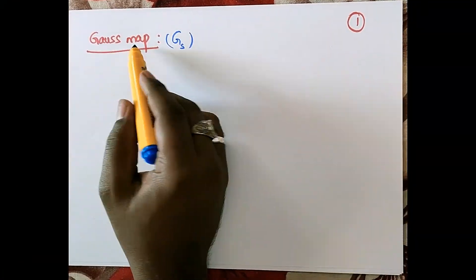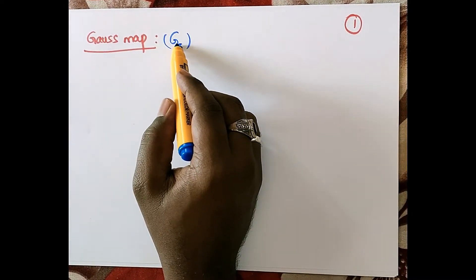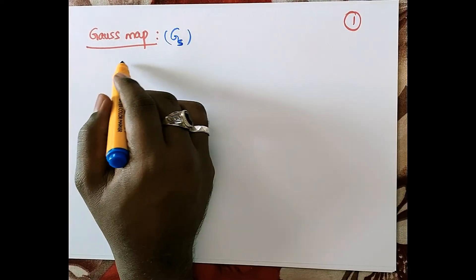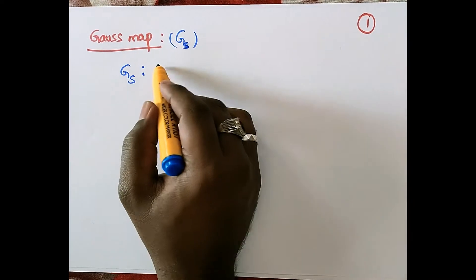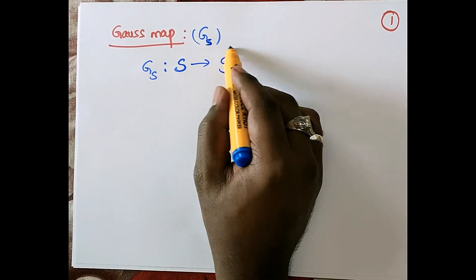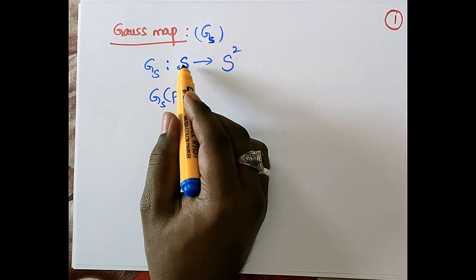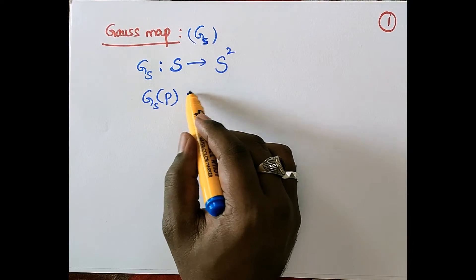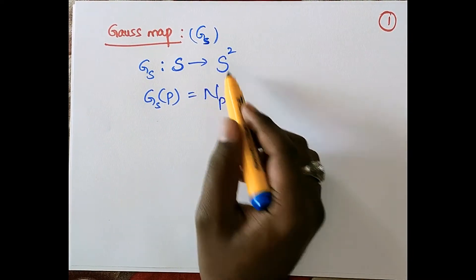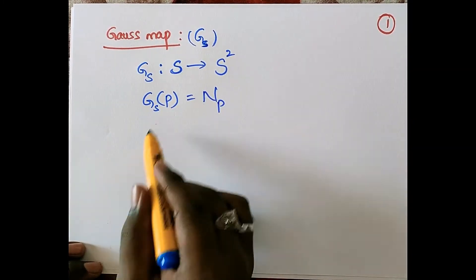The Gauss map is denoted by G_S, where S refers to the surface. The Gauss map is defined from the surface S to the unit sphere S², where each point p of the surface is mapped to its unit normal at the point p, which lies on S². Let's look at this definition in a geometric sense.